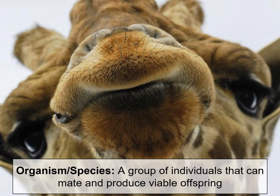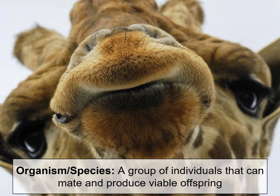An organism, or a species — which is a group of that same organism — is a group of individuals that can mate and produce viable offspring. So if you classify an organism as a species, they have to be able to mate with each other and produce offspring that can also produce offspring.